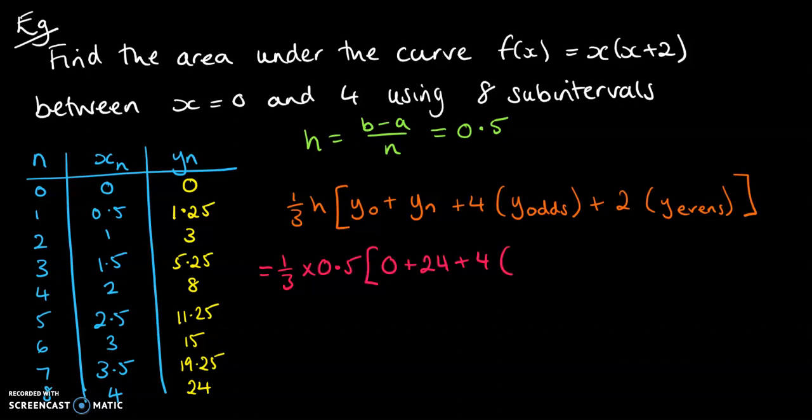Plus four times, now we need to add up the Y odds. So here are our odds. We're adding up 1.25, 5.25, 11.25, 19.25. That gives us a total of 37 plus two times the evens. So evens, we've got three, eight and 15 to add together. We don't count the eight and the zero because they were counted as the first and the last term. That comes to 26.